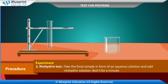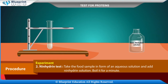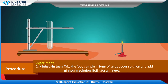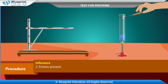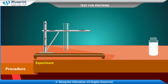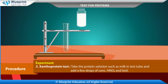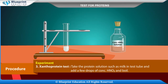Experiment 2 — Ninhydrin Test: Take the food sample in the form of an aqueous solution and add ninhydrin solution. Boil it for a minute. Observation: Blue coloration appears. Inference: Protein present.